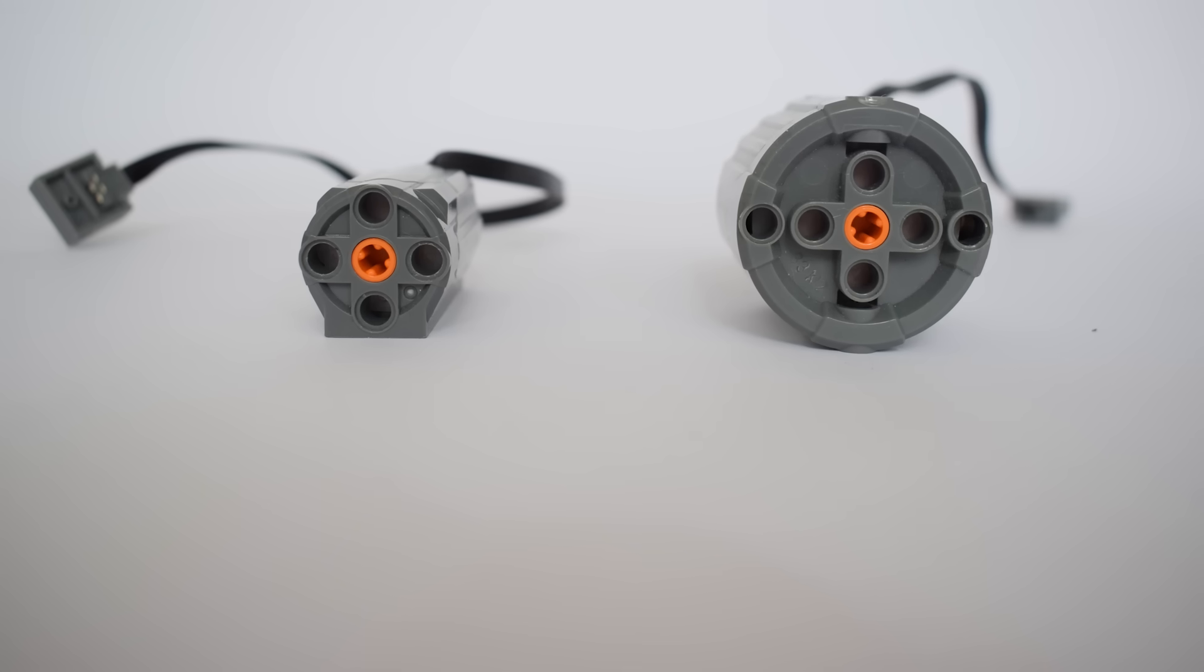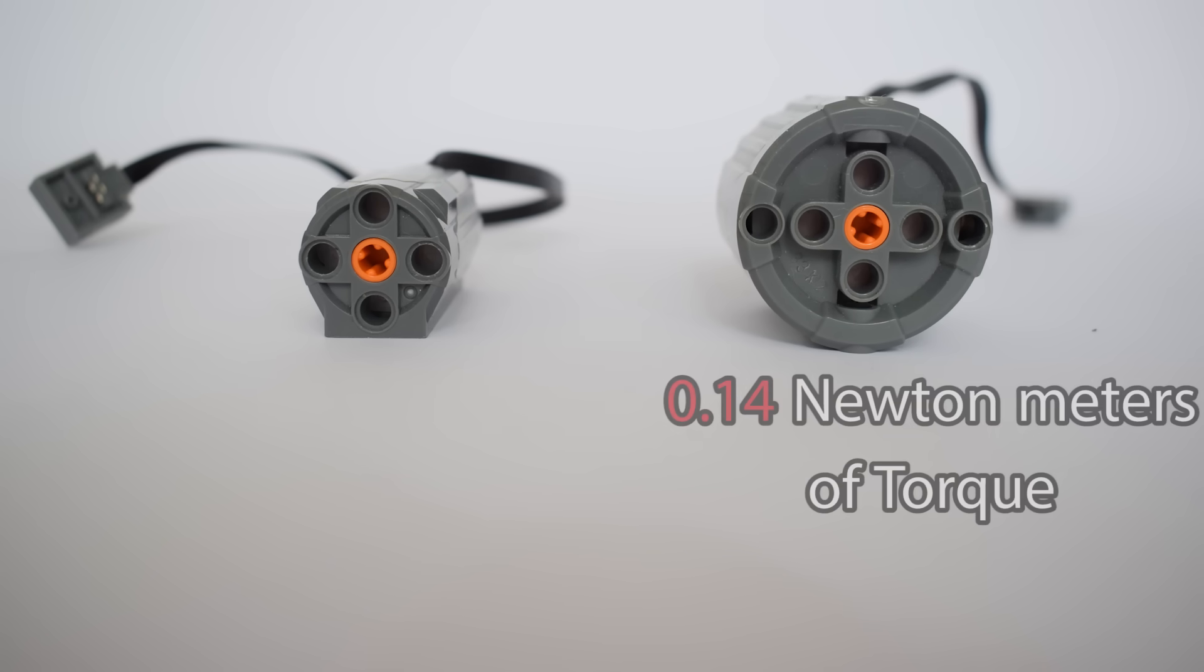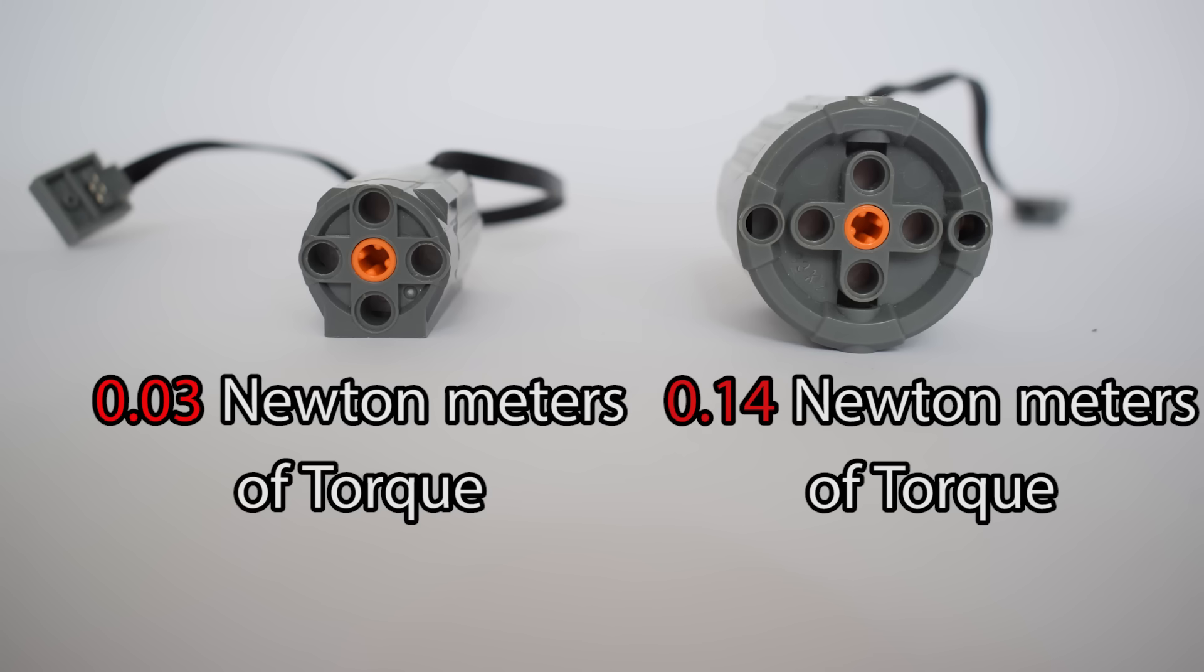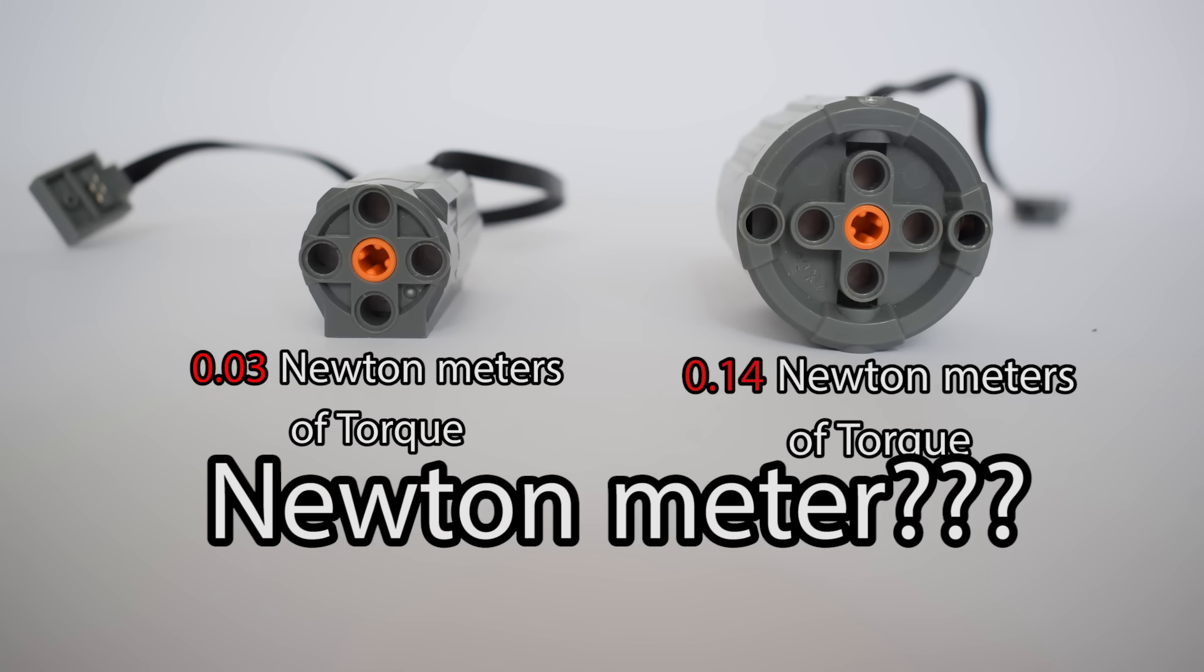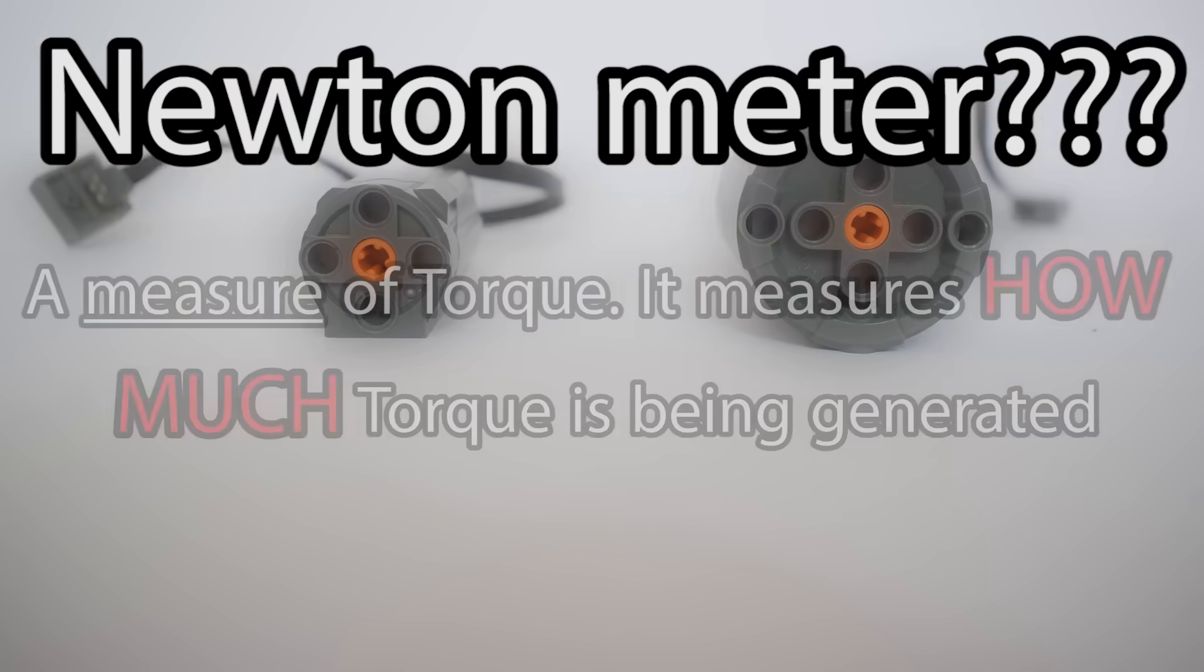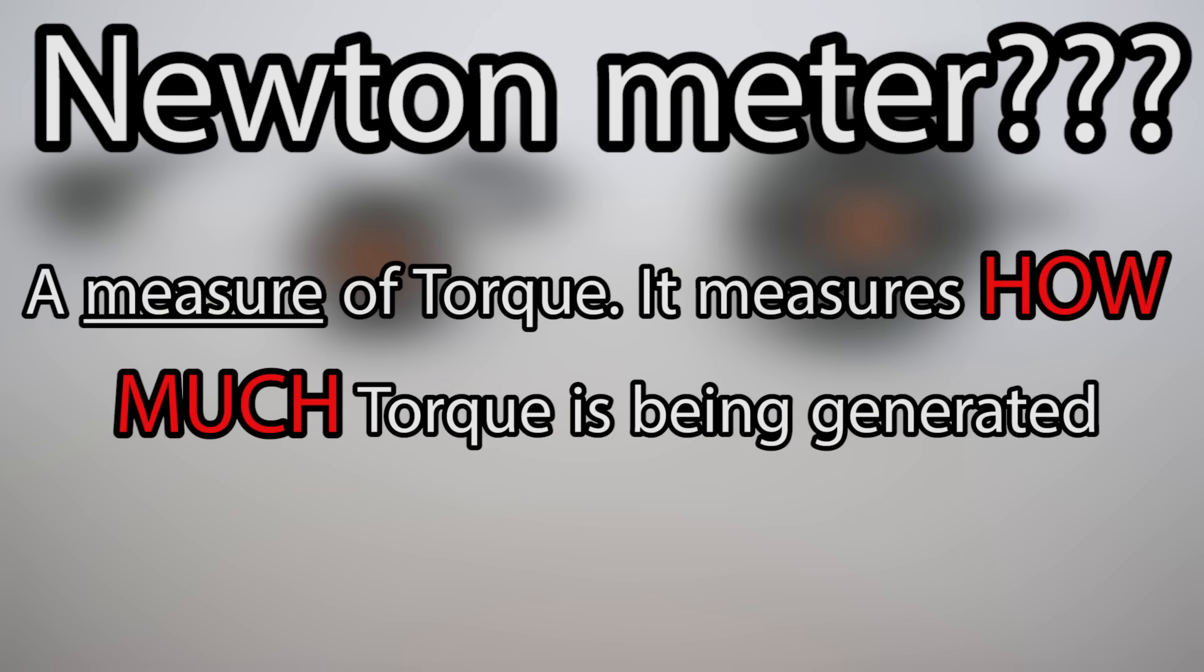Now, this large Lego motor outputs 0.14 newton meters of torque and the smaller Lego motor outputs 0.03 newton meters of torque. What's a newton meter? A newton meter is a measure of torque. It measures how much torque is being generated.